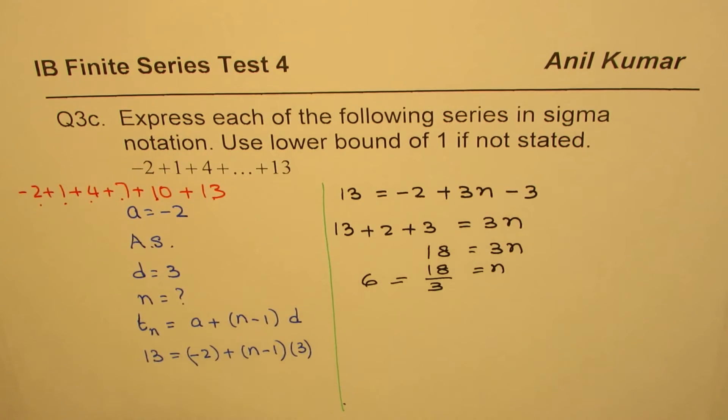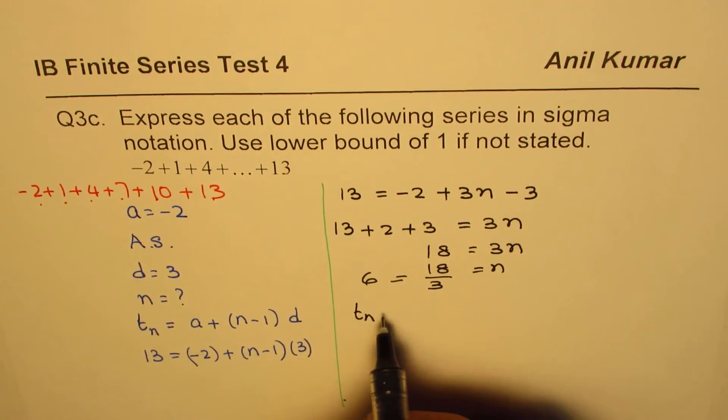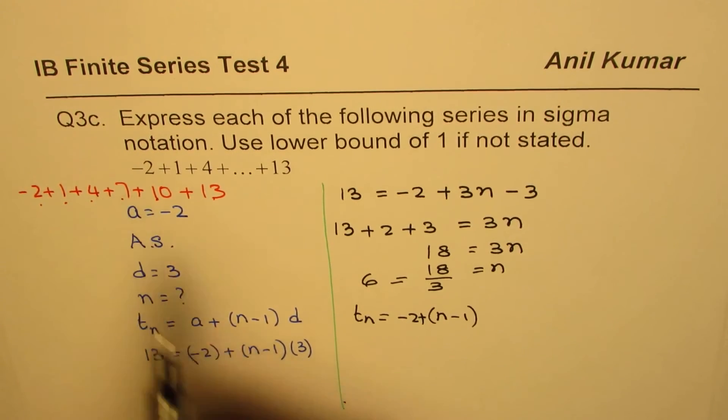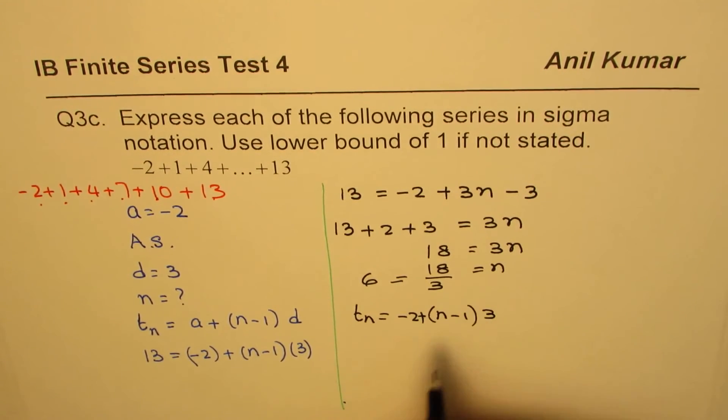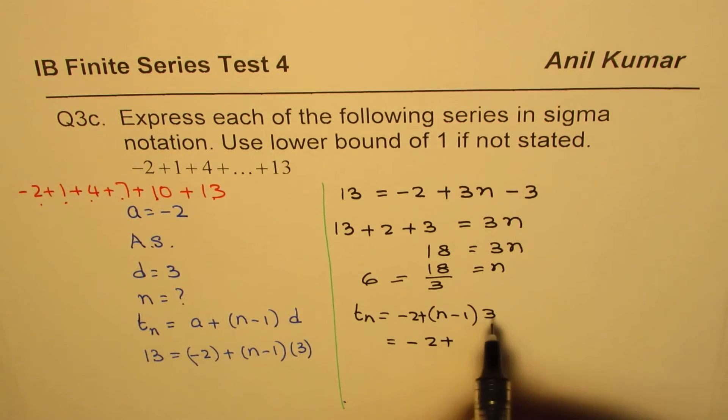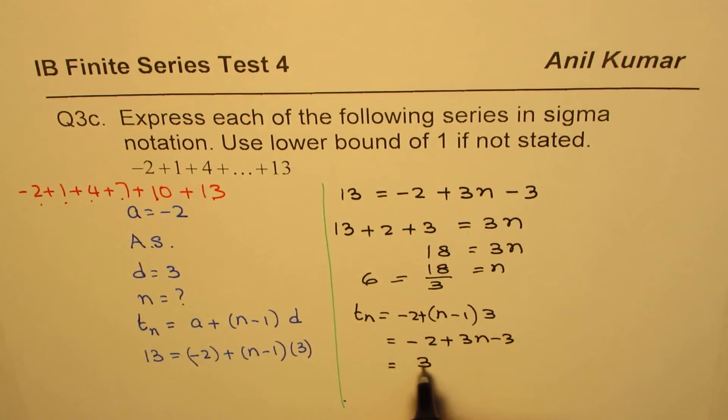Now the question is how to write sigma notation. For sigma notation we'll simplify the general term tn. I'm going to rewrite this term tn with the values of a as -2 plus (n-1) times 3. Let's simplify this. The general term is -2 + 3n - 3, or you could write this as 3n - 5.